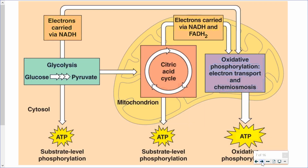This picture shows us overall the three different stages of cellular respiration. Stage one, which I'll cover in this lesson, is glycolysis. Stage two is the citric acid cycle, also known as the Krebs cycle. Stage three is oxidative phosphorylation, which involves the electron transport chain and chemiosmosis. The stage I'm focusing on in this lesson does not use the mitochondria at all — glycolysis takes place in the watery portion of the cell, which is the cytosol.